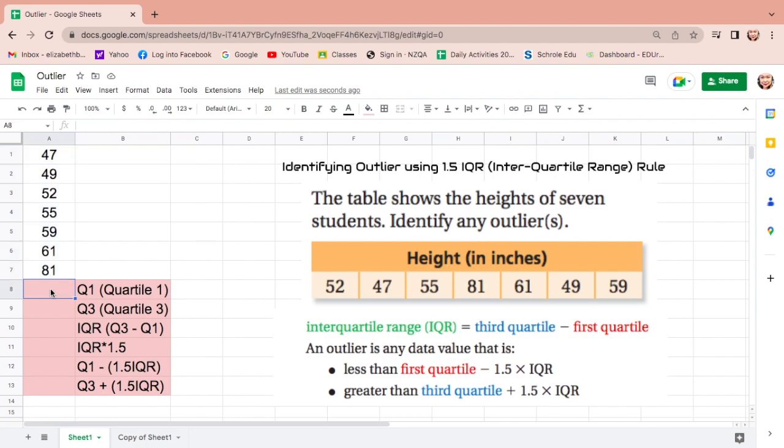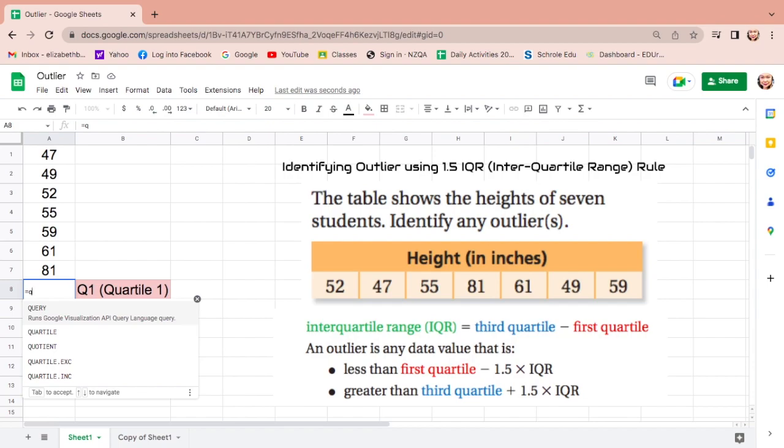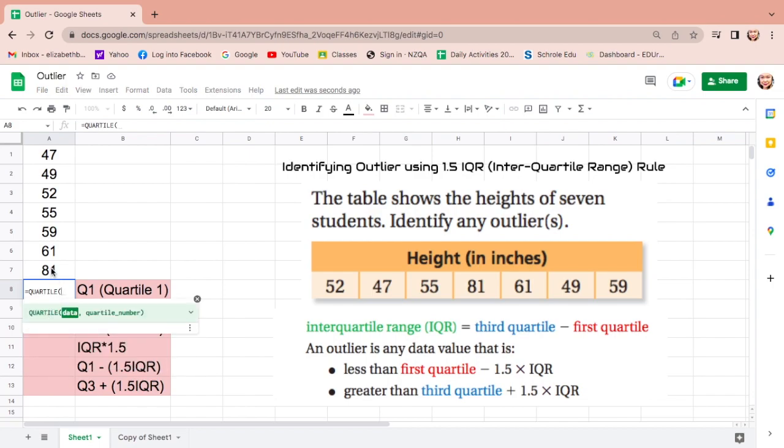To find if there are outliers, first find Q1 equals, type quartile Q-U-A, and there are suggestions down here. Click quartile, then highlight all the data, comma, quartile 1, press 1, then enter.